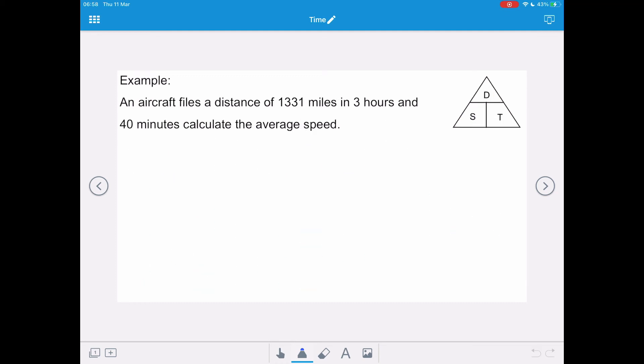In our next example, an aircraft flies a distance of 1331 miles in 3 hours and 40 minutes, and we want to calculate the average speed. So, speed equals distance divided by time. So, we're trying to work out speed. That's our unknown. The distance is 1331 miles. And our time is 3 hours and 40 minutes.